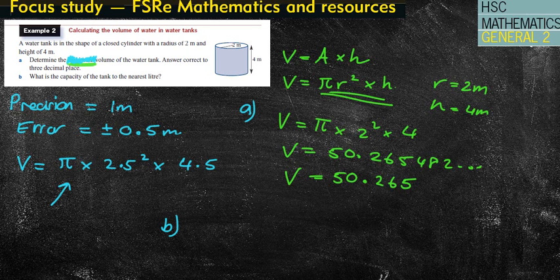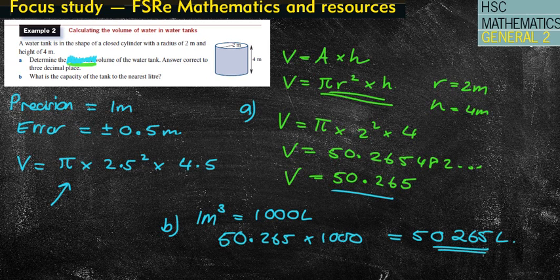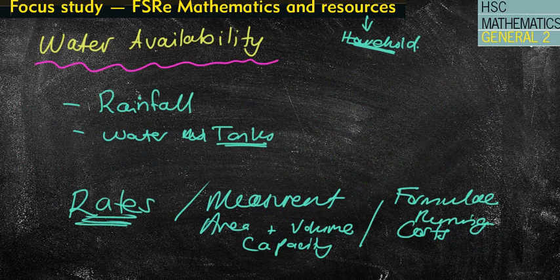Part B, what is the capacity of the tank to the nearest liter? That should be pretty straightforward. That isn't debatable. One metre cubed has a capacity of 1,000 litres. Therefore, 50.265 metres cubed would be simply 50.265 times 1,000 litres, which gives us a value of 50,265 litres to the nearest litre. That is pretty much it for the work upon the water availability with rainfall and water tanks.